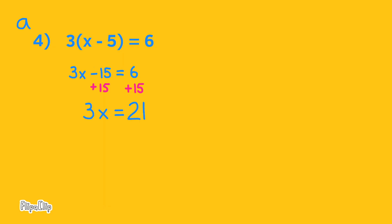Add 15 to both sides, and you have 3x equals 21. To get the x alone, you divide by 3. 3x divided by 3 equals 1x, or x. And since we divided the left side by 3, we divide the right side by 3. 21 divided by 3 is 7. x equals 7.